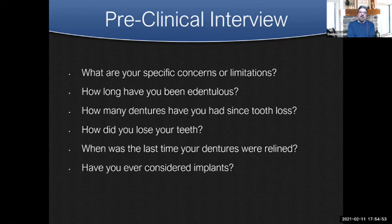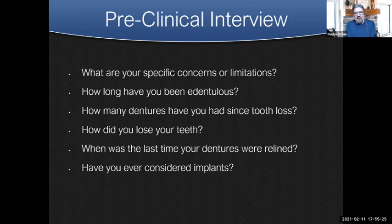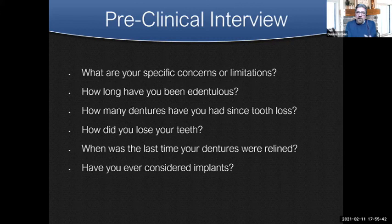The preclinical interview includes asking: what are your special concerns or limitations? How long have you been edentulous? How many dentures have you had since your tooth loss? How did you lose your teeth? When was the last time your dentures were relined? I've seen patients who were wearing dentures for 15 years and never had them checked — they needed relining and the occlusion was off, causing major problems because they weren't being evaluated regularly. Also: how old are the dentures, and have you considered implants? Today we're going to talk mostly about full upper and full lower dentures.